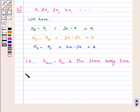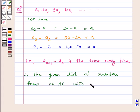Therefore, the given list of numbers forms an AP with common difference D equal to A.